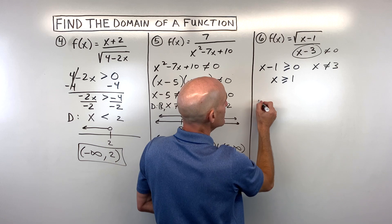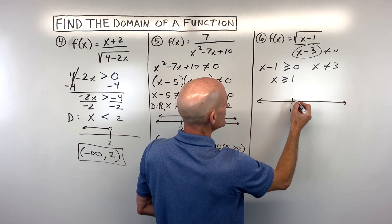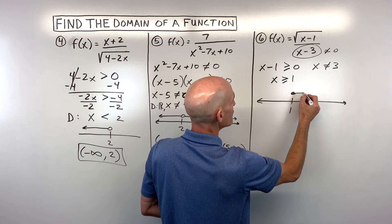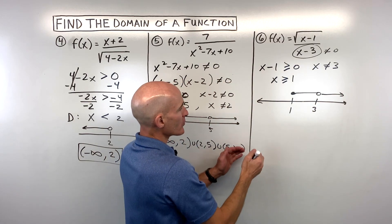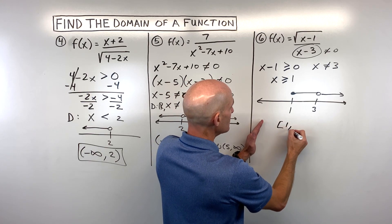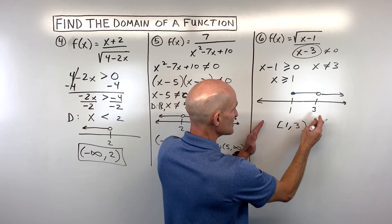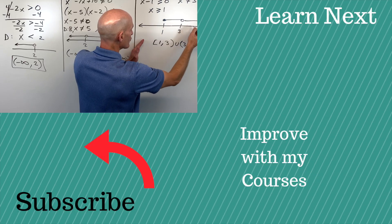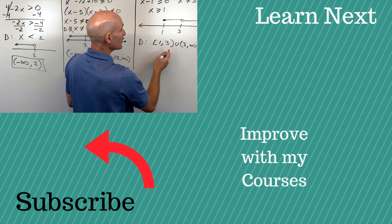Going to the number line: x has to be greater than or equal to one, but it has to skip over three — there's going to be an open circle right there. In interval notation: from one, including one, we use a square bracket, up to three with a parenthesis because we don't want to include three; then union, parenthesis again because we don't want to include three, all the way to positive infinity. And that's your domain in interval notation.